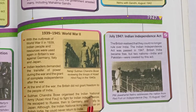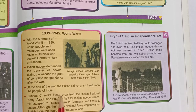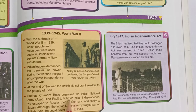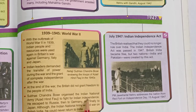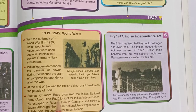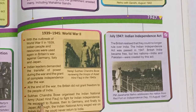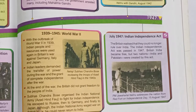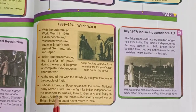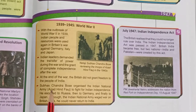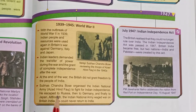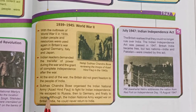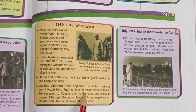Subhash Chandra Bose organized the Indian National Army (INA), also called Azad Hind Fauj, to fight for Indian independence. He escaped to Russia, then to Germany, then to Japan, to avoid being arrested by the British and to build alliances for India's freedom.